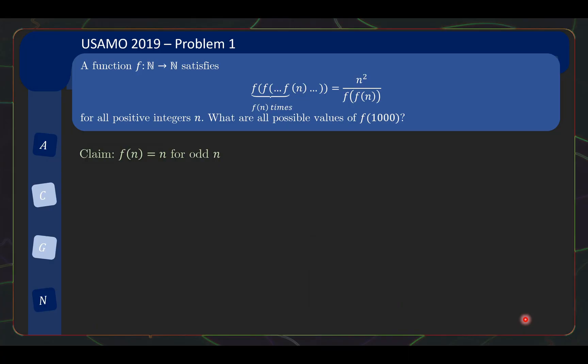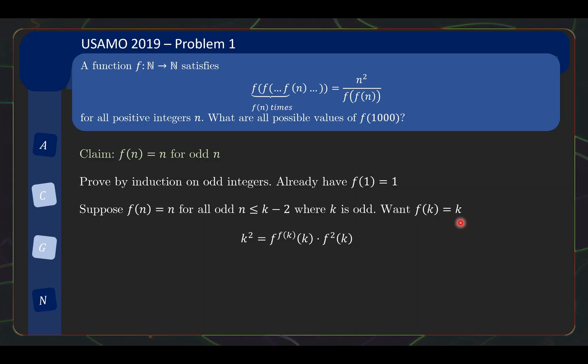Okay. Now, the next claim is f(n) is equal to n for odd n. Okay, how do we prove this? This is another part of the problem that is actually quite tricky. And it turns out that one of the more reasonable proof is to just use induction. So, we do have f(1) equals 1 already. And by induction, how do we apply induction? We suppose f(n) is equal to n for all the odd n that is less than or equal to k minus 2, where k is odd. And we want to show f(k) is equal to k. This is the tricky part. How do we show this?